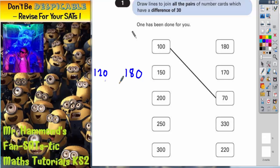So do we have either of those two numbers on the other side? Yes we do. We've got 180 there. So 150 must join to 180.